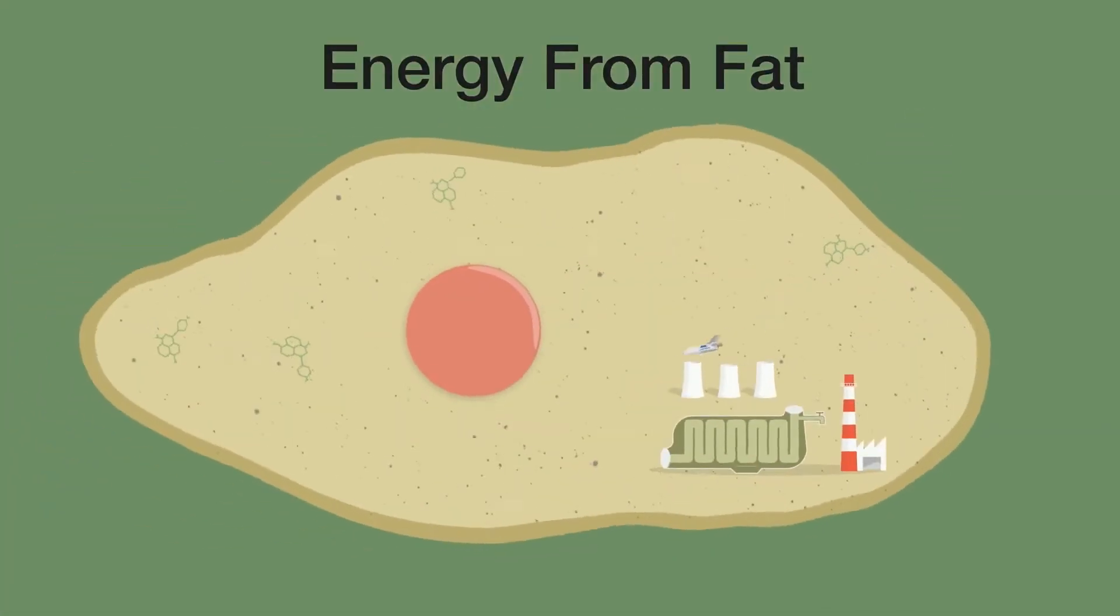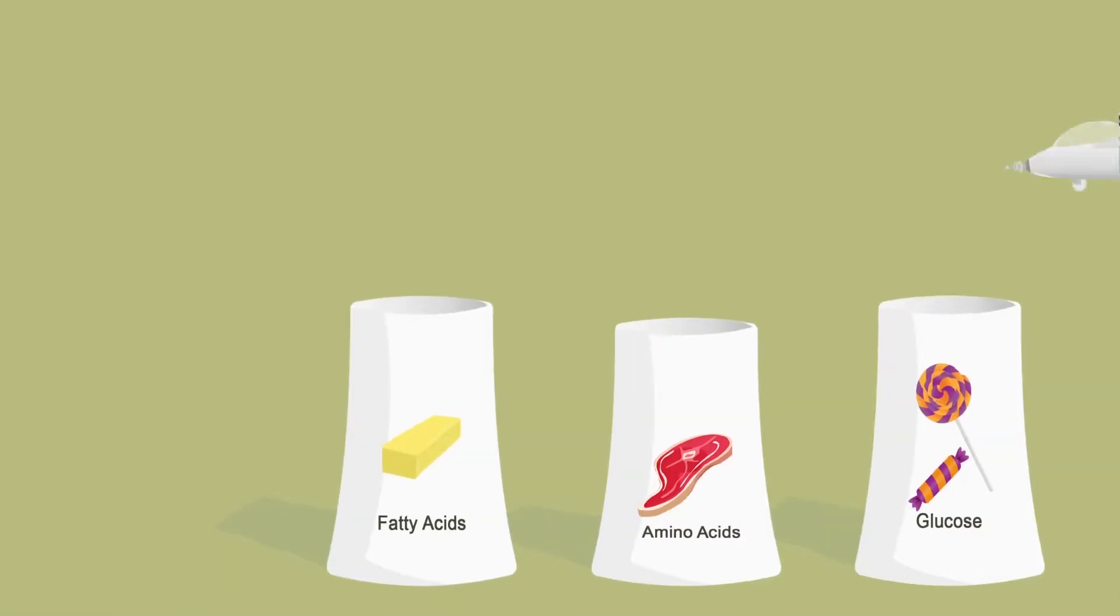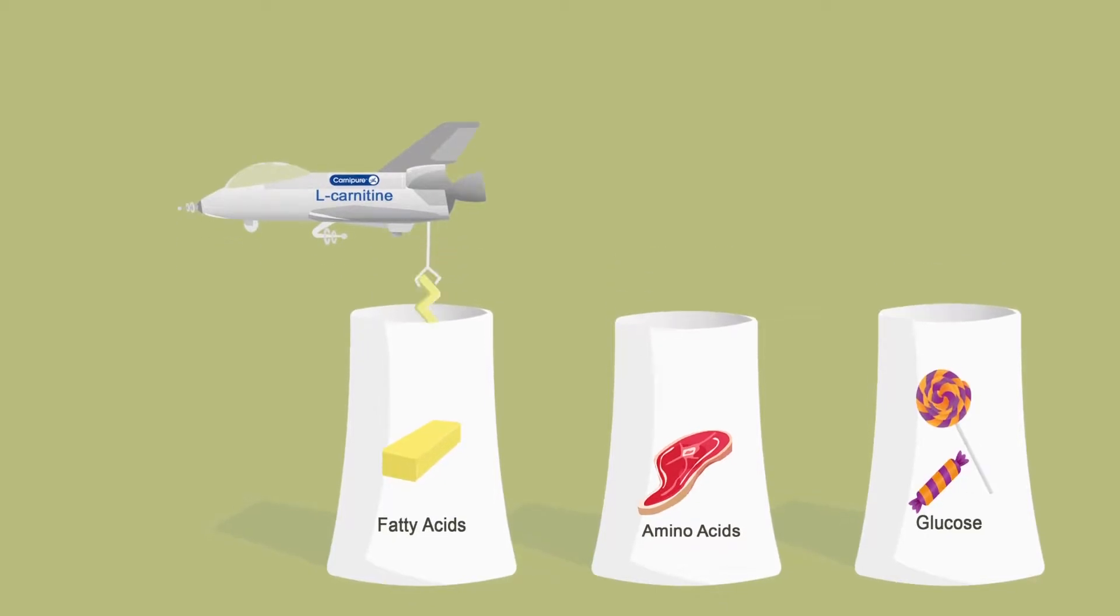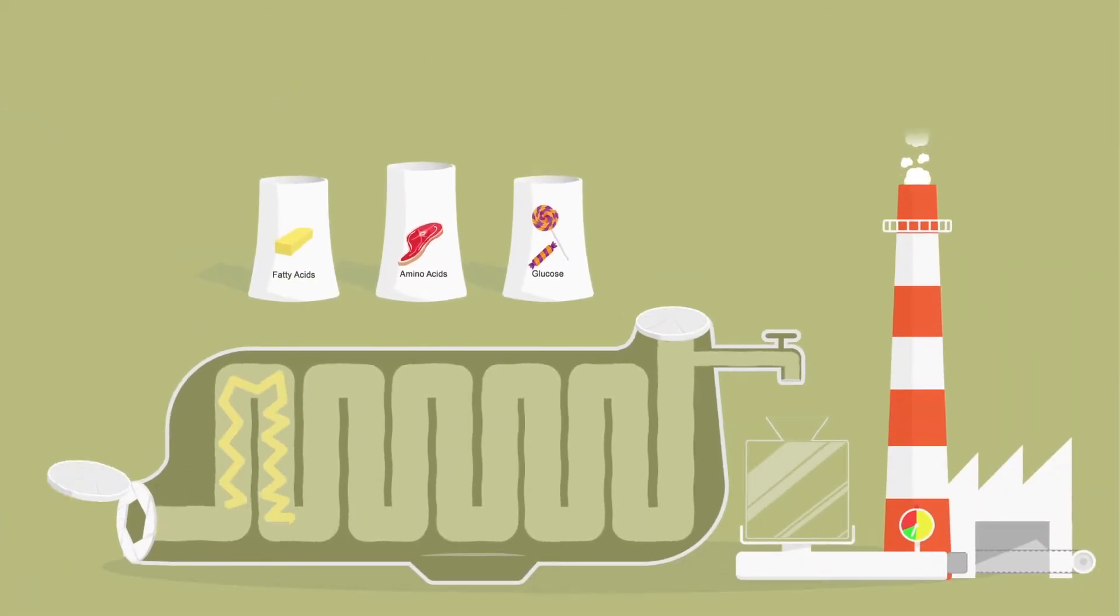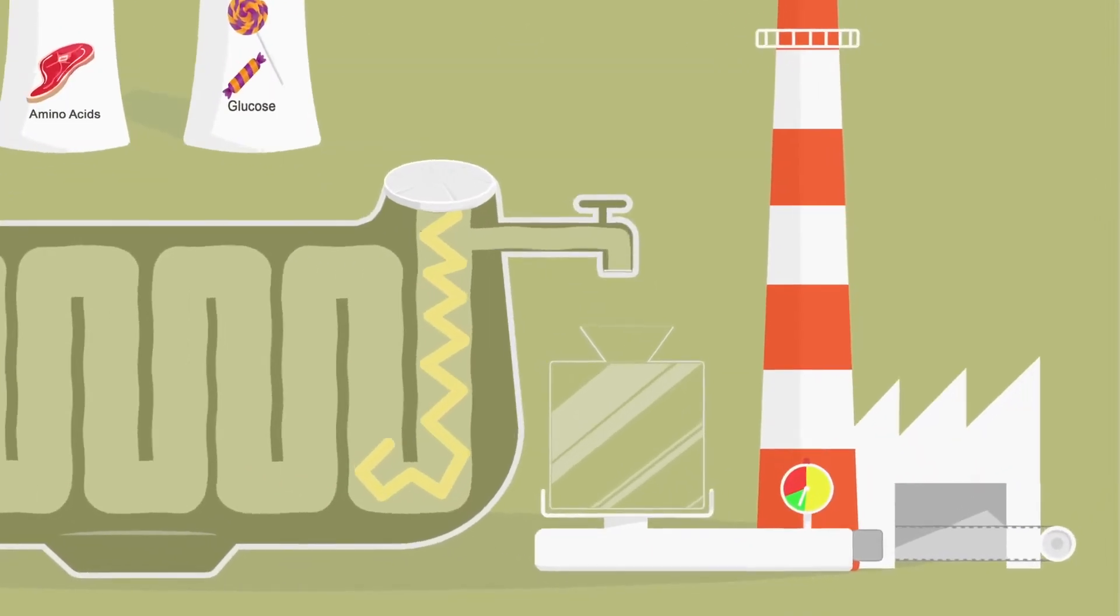Carnipur L-Carnitine can help your body generate energy from fat. The process starts with the binding of L-Carnitine to activated long-chain fatty acids. This allows their transport through the mitochondrial membranes. The fatty acids are released to make the L-Carnitine available for another cycle of transport.